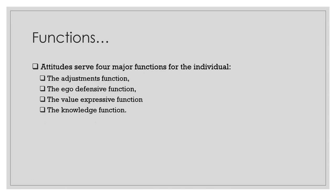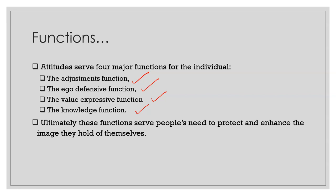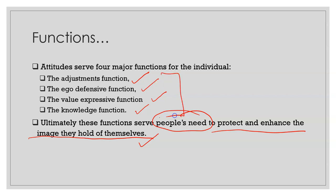So what are the four functions we have in attitude? The four functions are: adjustment function, ego defensive function, value expressive function, and knowledge function. These functions signify or serve people's need to protect and enhance their image. Every person builds a self-image and wants to protect or enhance that image, and for that purpose these functions are very useful.